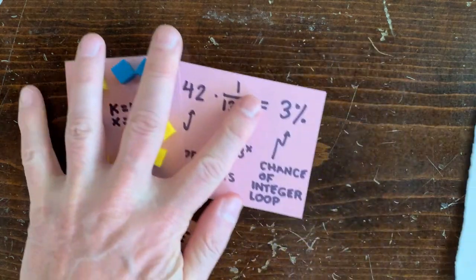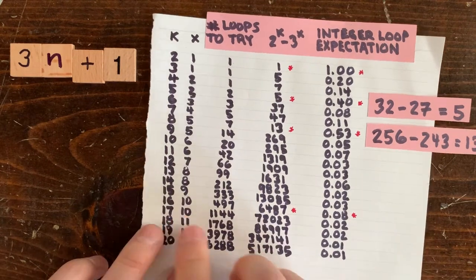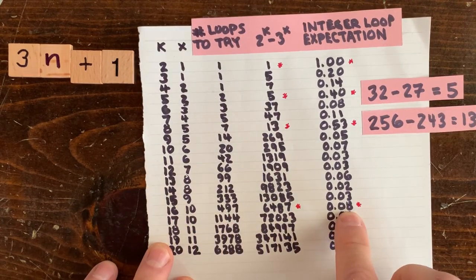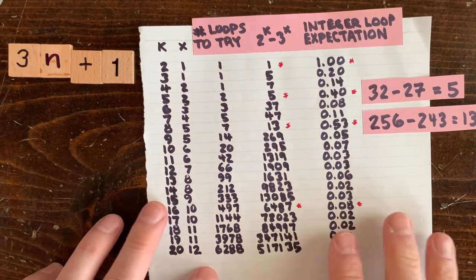How about all the other values of k, say, from 1 to 20? So here they are. So if we look at k equals 16, there's an 8% chance of an integer loop. Much better chance than what we saw at k equals 11 just now.